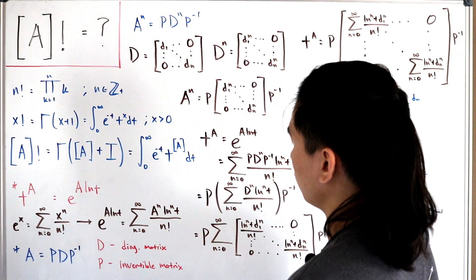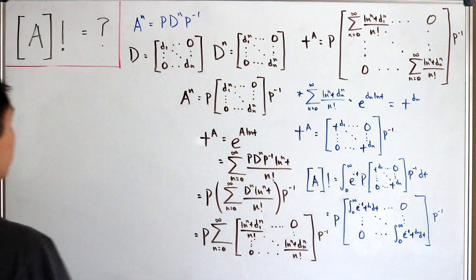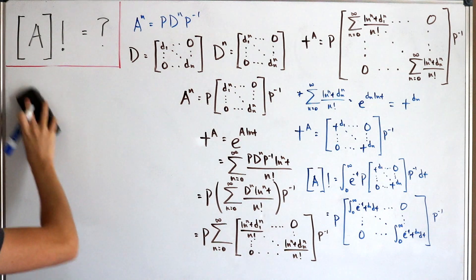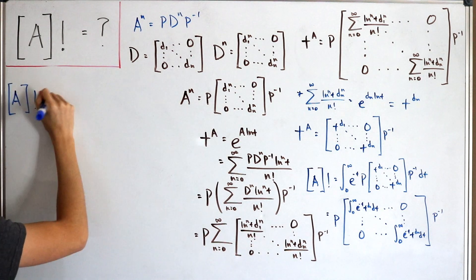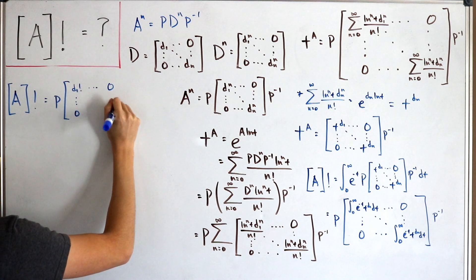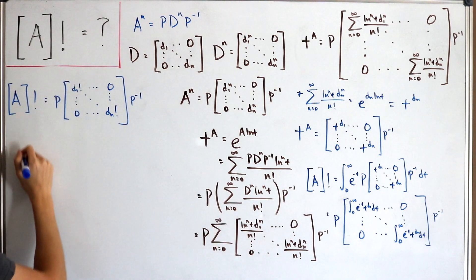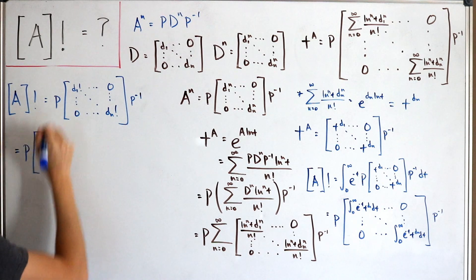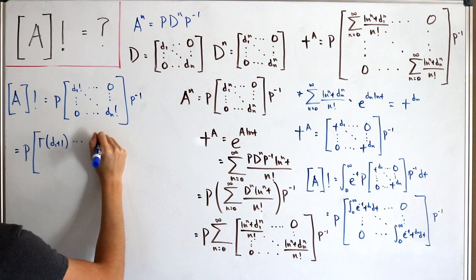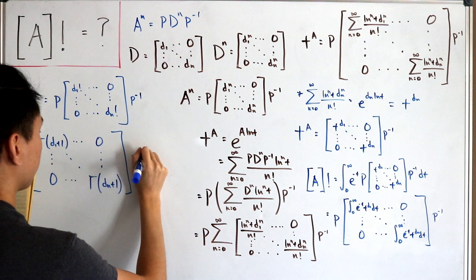Replacing those improper integrals with the gamma function definition, A factorial equals P times the diagonal matrix with entries d sub 1 factorial, ..., d sub n factorial, times P inverse. Equivalently, writing in terms of gamma: A factorial equals P times the diagonal matrix with entries gamma(d sub 1 plus 1), ..., gamma(d sub n plus 1), times P inverse. And that is our closed form.